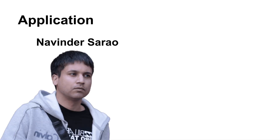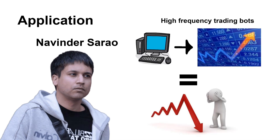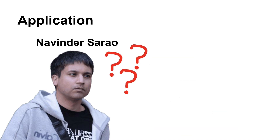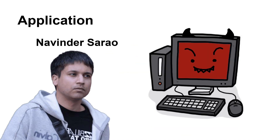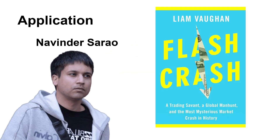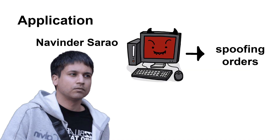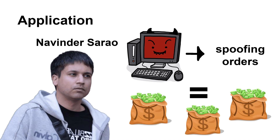Onto the story of one of the most infamous traders: Navinder Singh Sarao. He was frustrated that new high-frequency trading bots were dampening his own profits, so he made his own trading program that caused the 2010 US stock and futures market crash and profited him over $50 million. This was called the flash crash — he basically spoofed sell orders which knocked down a trillion dollars of value of American companies in a matter of minutes.